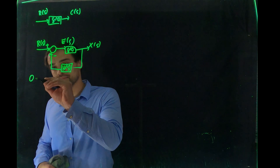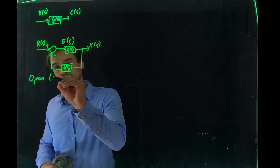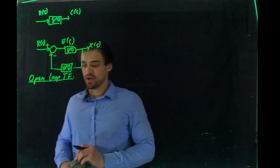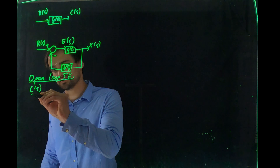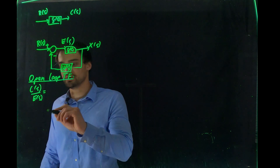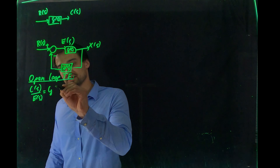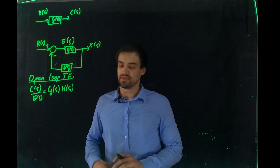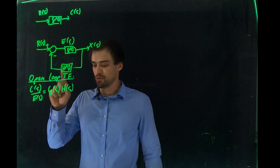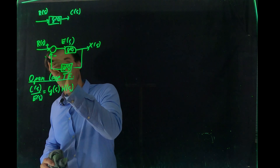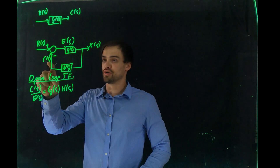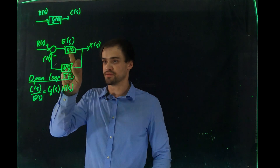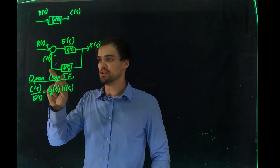Now let's look at the open-loop transfer function. The open-loop transfer function is simply C(S) over E(S) equals G(S) multiplied by H(S). This means we are looking at the output C(S) over input E(S), where the signal is multiplied by G(S) and H(S). It is very simple — from input to output through both transfer functions.